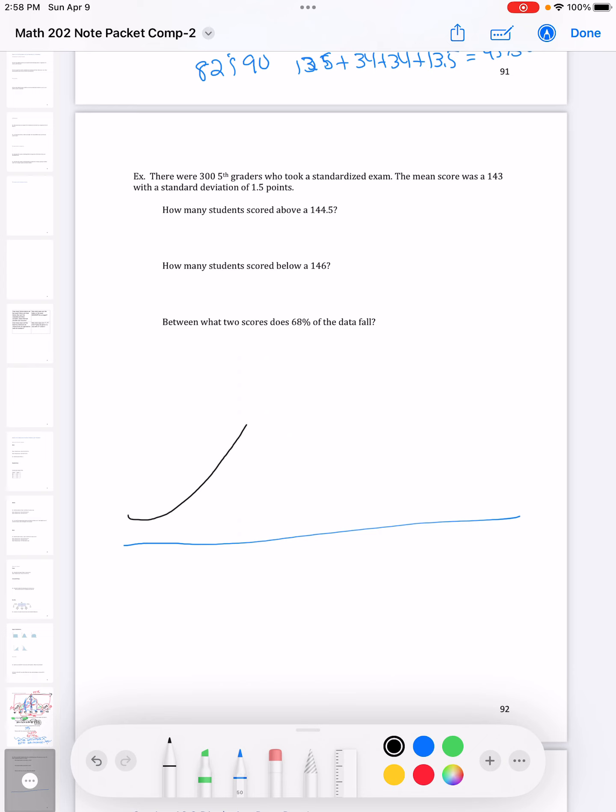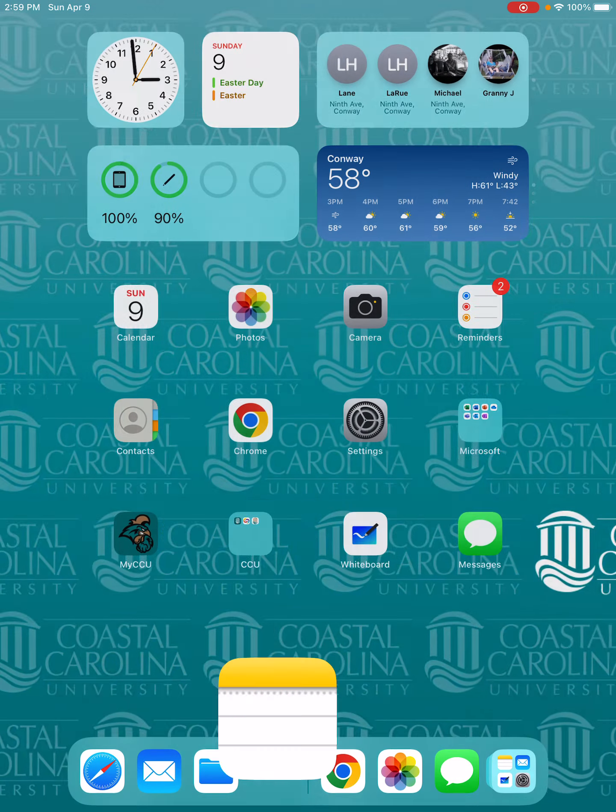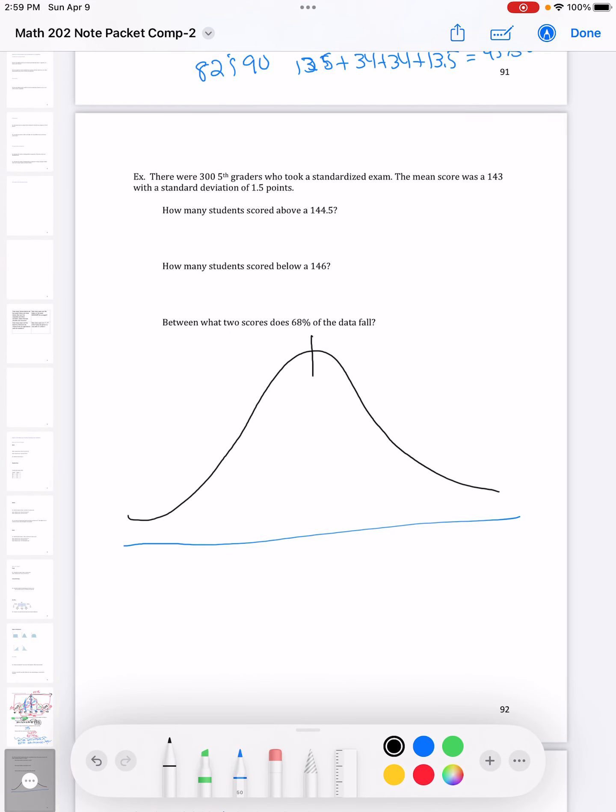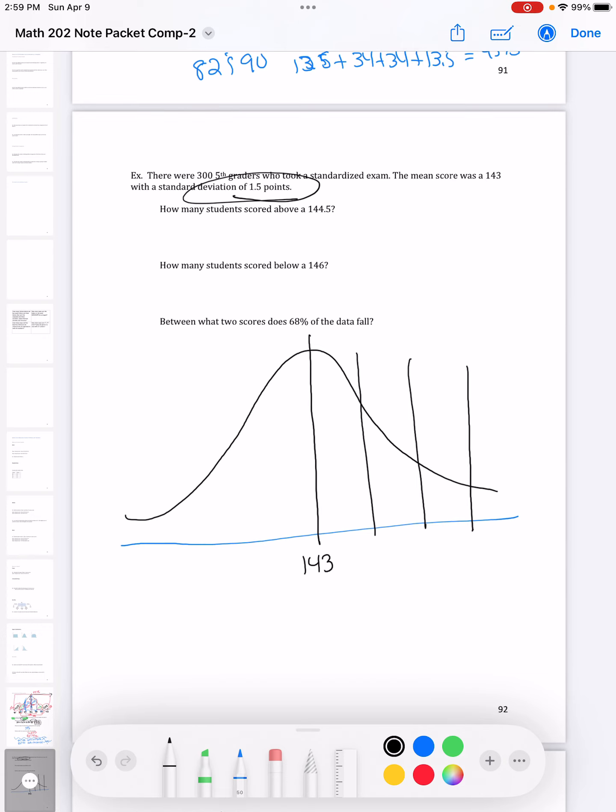Let's see how we did. So we're going to draw a curve. We're going to start in the middle. We're going to start with the mean in the middle. So that was 143. And then my standard deviation, I can go out three times. I'm going to add 1.5 because that's what the standard deviation was.